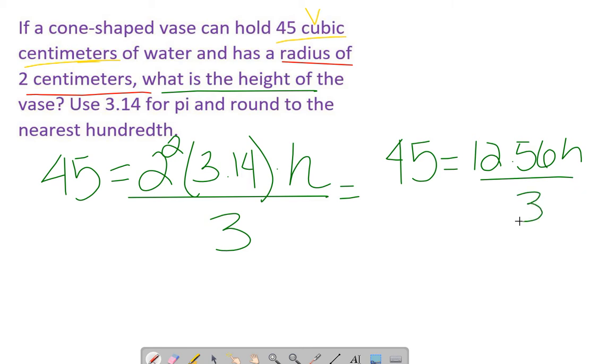Now we want to get rid of that fraction. We have a divide by 3. How do we get rid of that? Multiply both sides by 3. So 45 times 3 is 135 equals 12.56h.